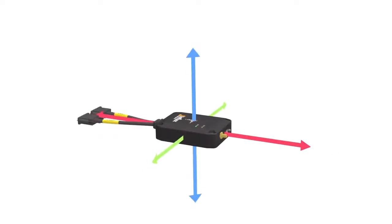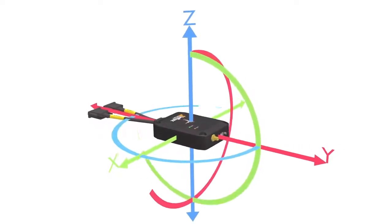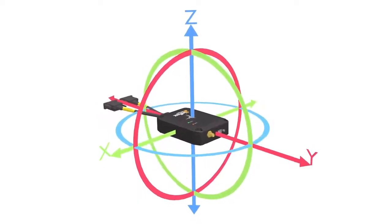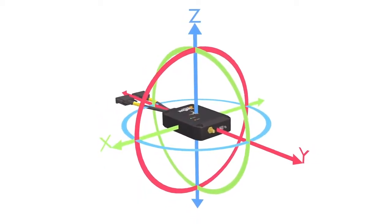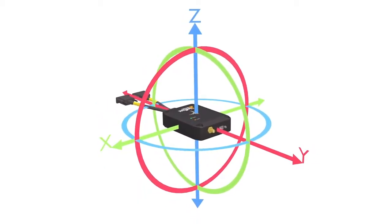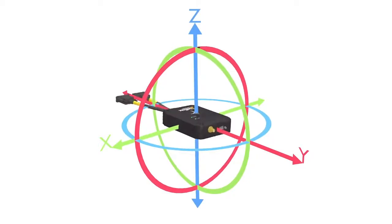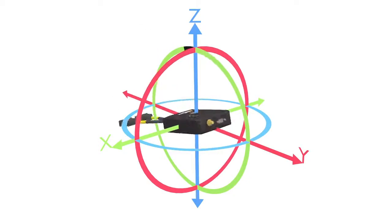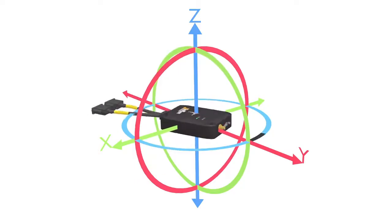Acceleration data alone does not account for turns and non-linear movement that a vehicle makes along its journey. To solve this, most IMU devices contain a gyroscope, which measures angular velocity about 3-axis: roll about the y-axis, pitch about the x-axis, and yaw about the z-axis.